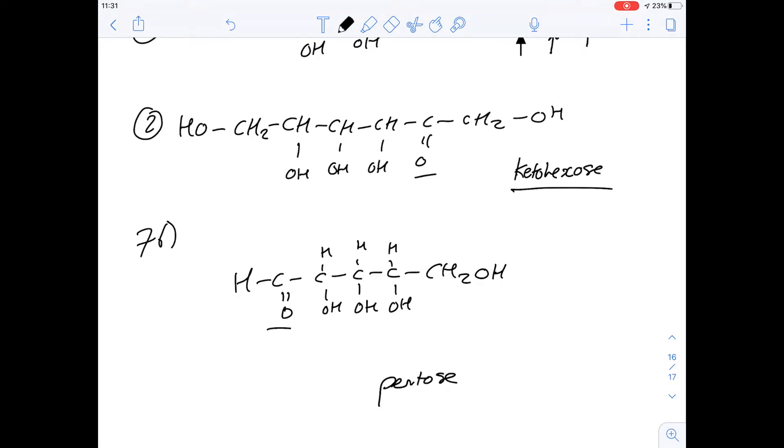So there's one, two, three, four, five. So it's a pentose, and this carbonyl group is at the end of the chain, so it's an aldopentose.